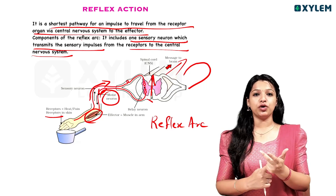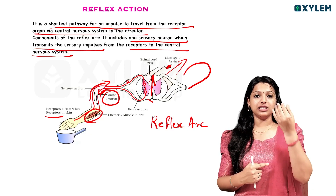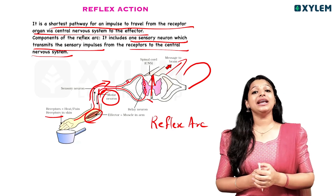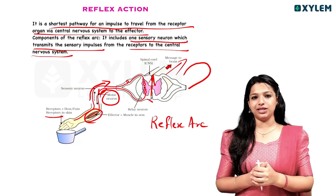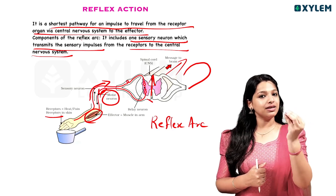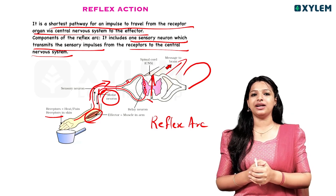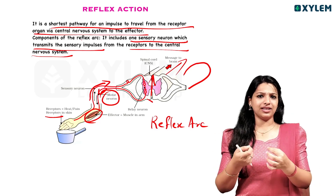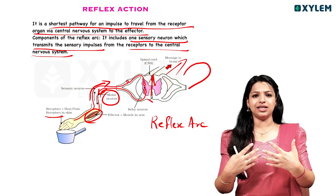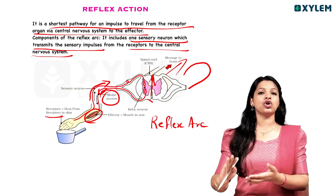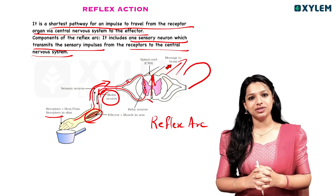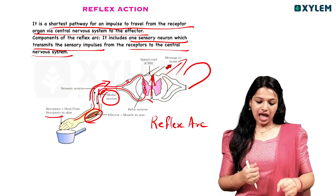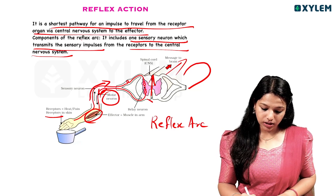We call the brain and the spinal cord the central nervous system, and the spinal nerves and cranial nerves the peripheral nervous system. We also call the sympathetic system and parasympathetic system the autonomic nervous system. The sympathetic system creates tension and the parasympathetic system normalizes — these are the controlling mechanisms.